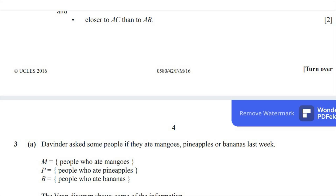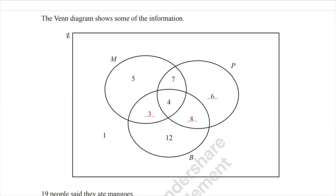Part A. Devinder asked some people if they ate mangoes, pineapples, or bananas last week. M stands for people who ate mangoes, P stands for people who ate pineapples, and B stands for people who ate bananas. The Venn diagram shows some of the information. This circle is named M — people who ate mangoes — same goes for P and B. This region represents people who didn't eat any of the foods.